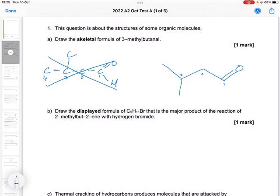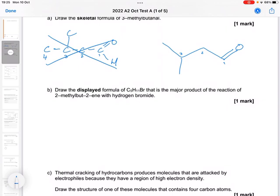Part B, draw the displayed formula of C5H11Br that is the major product of the reaction with 2-methylbutanil. So again, we'll start with 2-methylbutanil. So 1, 2, 3, 4.